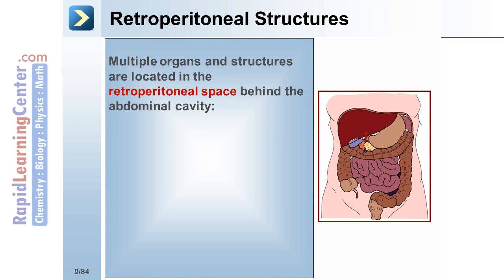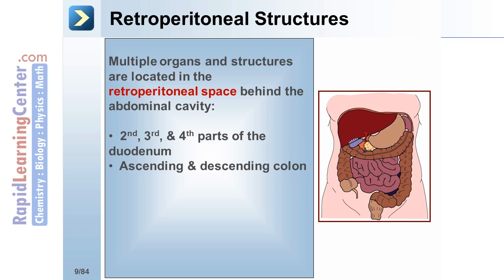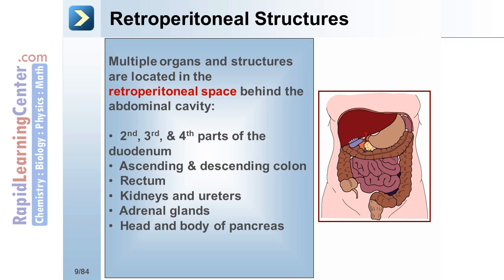Multiple organs and structures are located in the retroperitoneal space behind the abdominal cavity, which include the second, third, and fourth parts of the duodenum, ascending and descending colon, rectum, kidneys and ureters, adrenal glands, the head and body of the pancreas, the aorta, and the IVC.